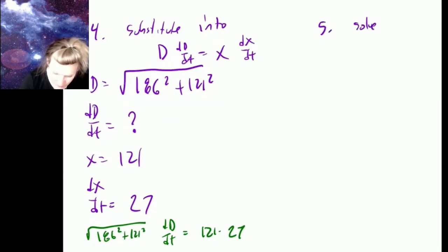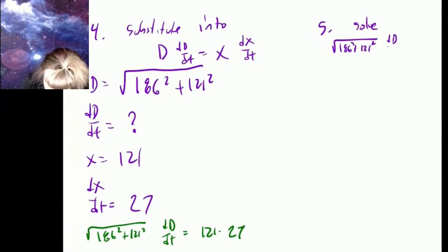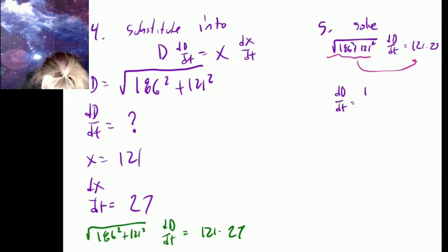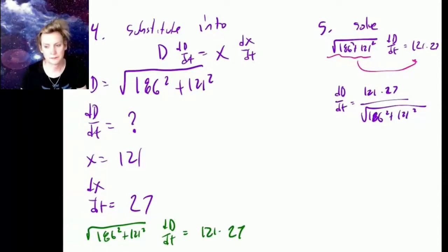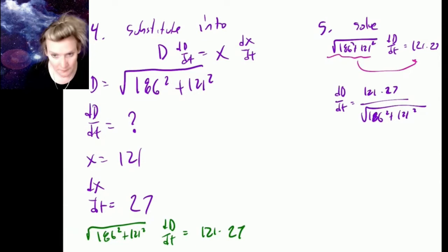Step five: solve. We take √(186² + 121²) · (dd/dt) = 121 · 27, then divide by that square root to the other side, so dd/dt equals (121 × 27) divided by the square root of 186² plus 121². We can evaluate that to a floating-point number or leave it as an exact value depending on our purpose. And we're done.